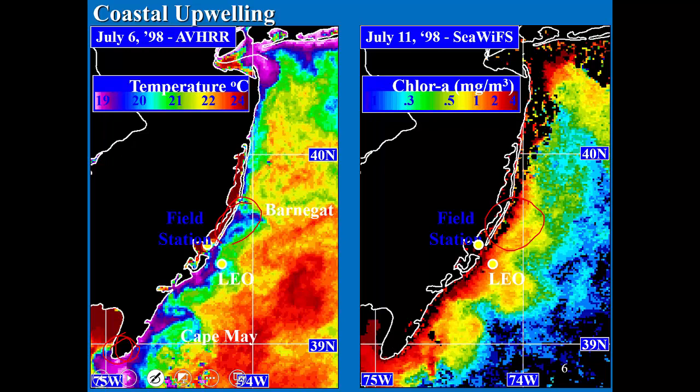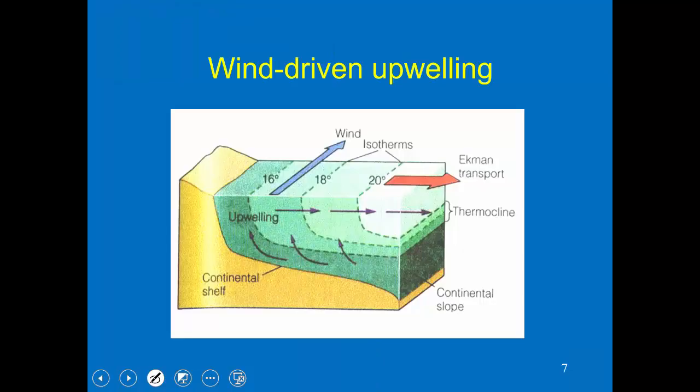The units here are milligrams per meter cubed, which is basically the same as micrograms per liter. For these waters, one or two is high — generally, for the oceans, that's high. In Delaware Bay those values may be 10 to 20 during the summer. The point of this diagram is showing this inverse relationship between temperature and chlorophyll, and that gives a hint about what's going on — and what's going on is upwelling.